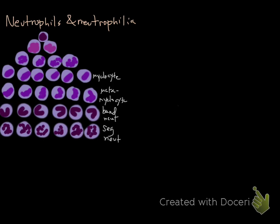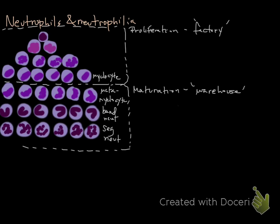So the proliferation pool contains cells that can still divide. So this is going to be the earliest neutrophil precursors and their stem cells. So I've blocked off the proliferation pool. And this is the factory again. And these guys can divide. And then the maturation pool or the warehouse. And these are the ones that can no longer divide. And within the maturation pool, we have what's called the storage pool. And this is a subset of this maturation pool. And it contains mature neutrophils. So this is the storage pool.